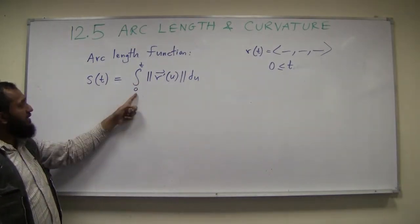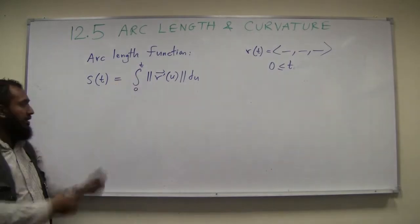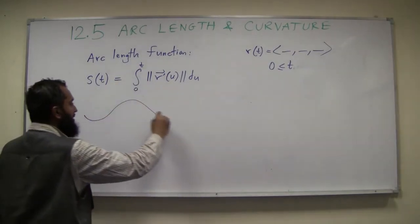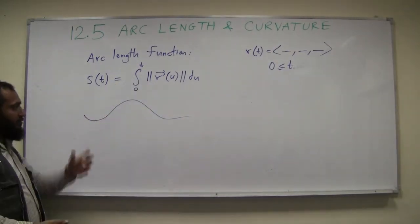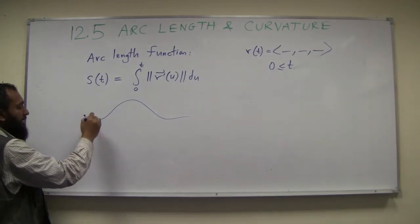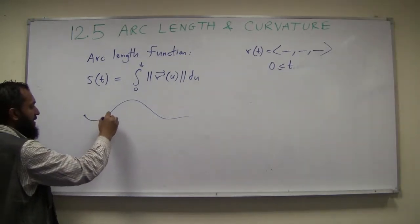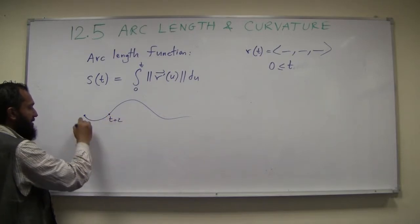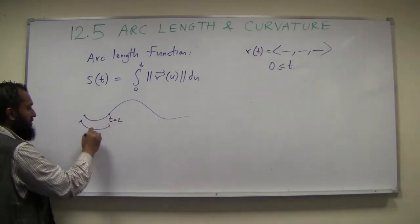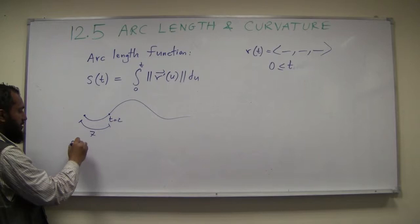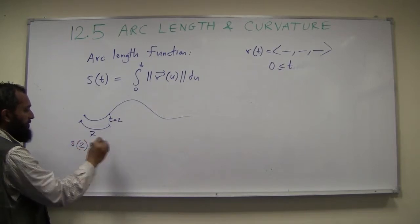So you plug in various values of t in the domain. Of course, if you plug s(0), you'll get the integral from 0 to 0, so you'll get nothing. So let's say the curve is like this, it's being traced out in 3D. So, let's say until here the length, let's say this is t equal to 2, and this length is 7. So then s(2) would equal 7, right?